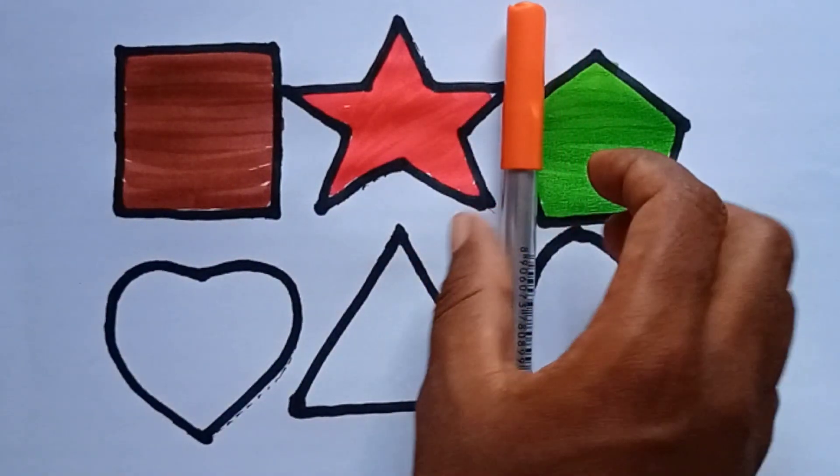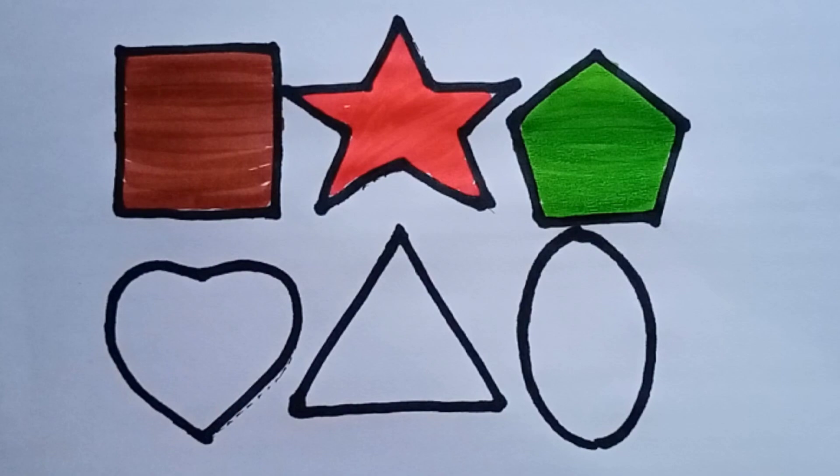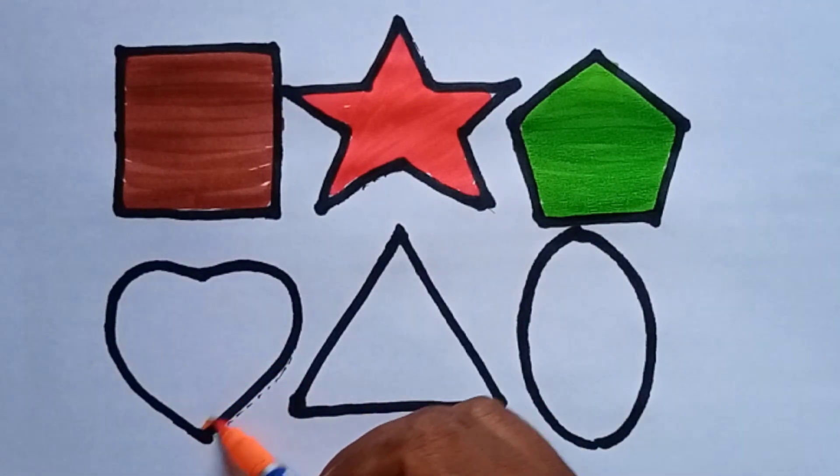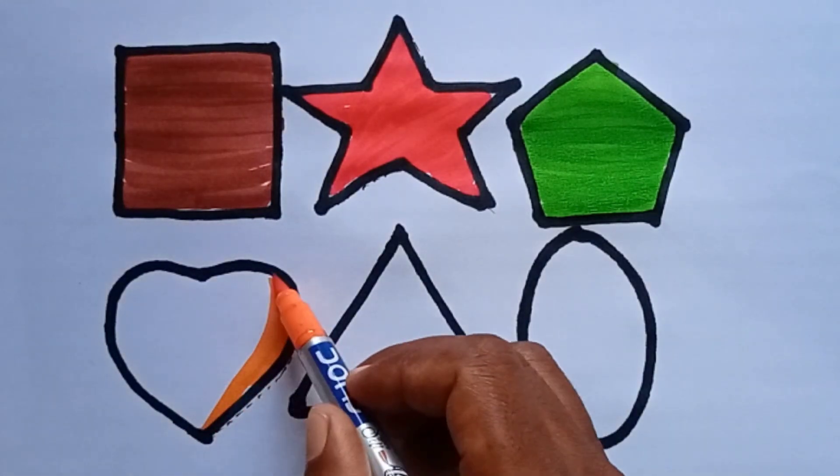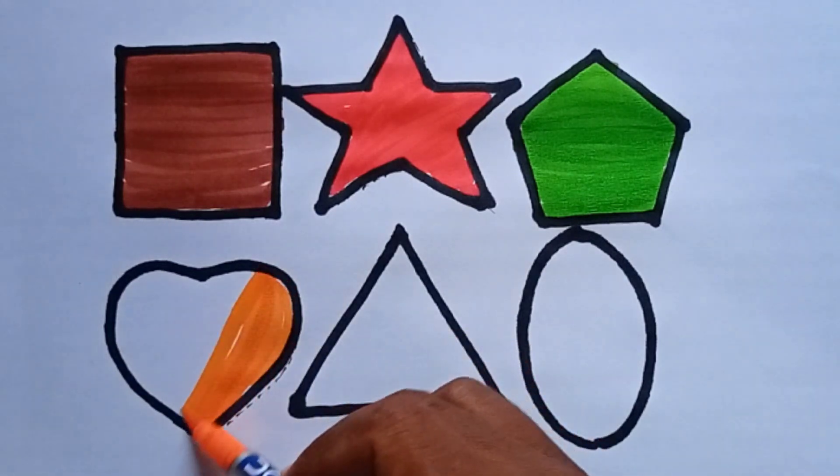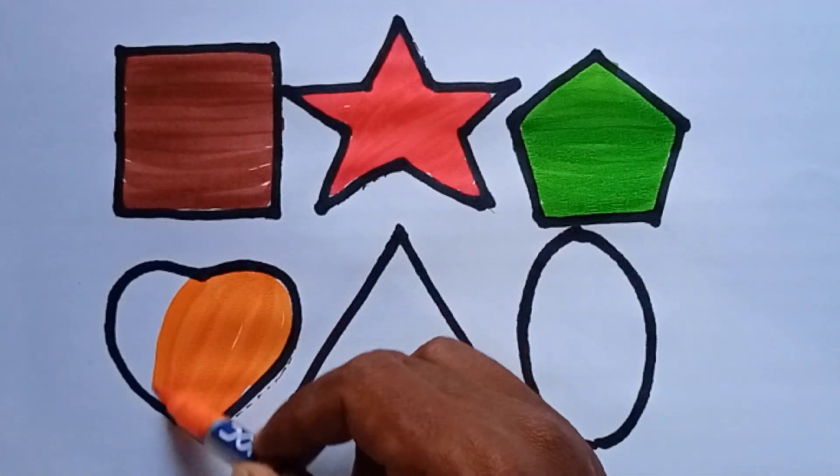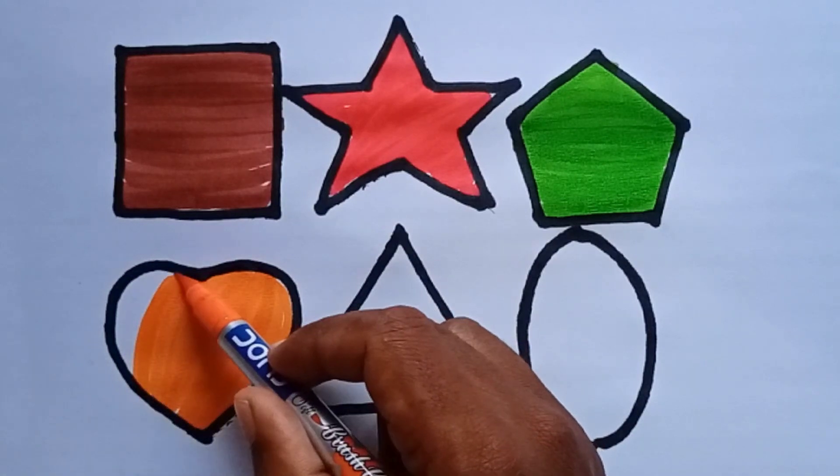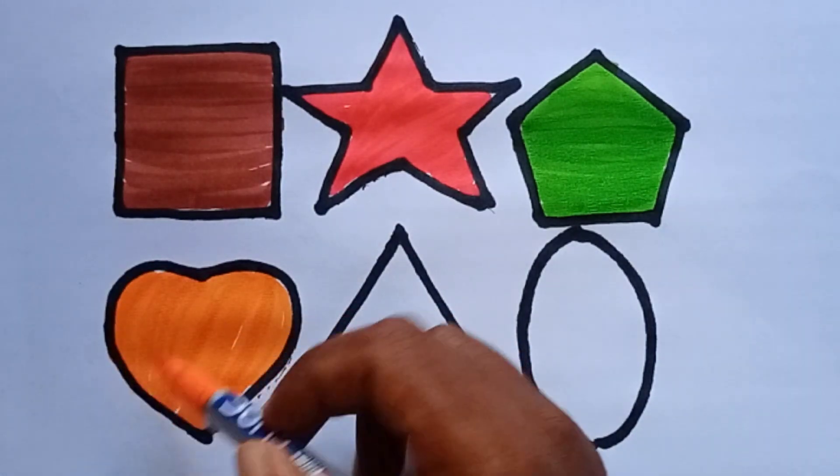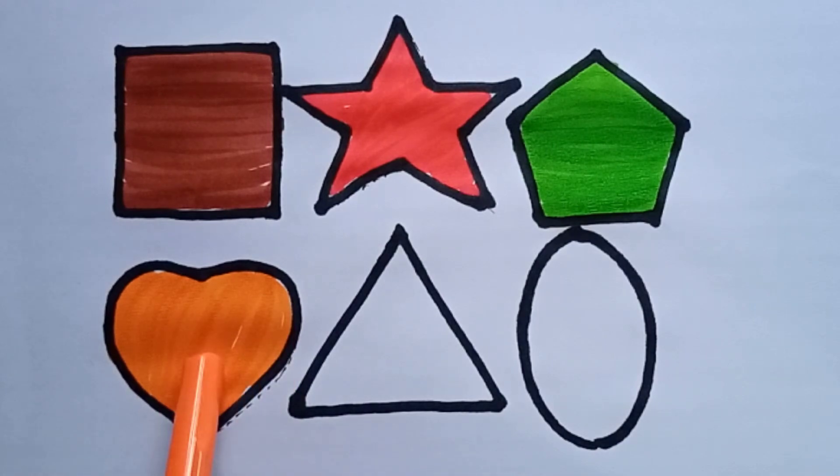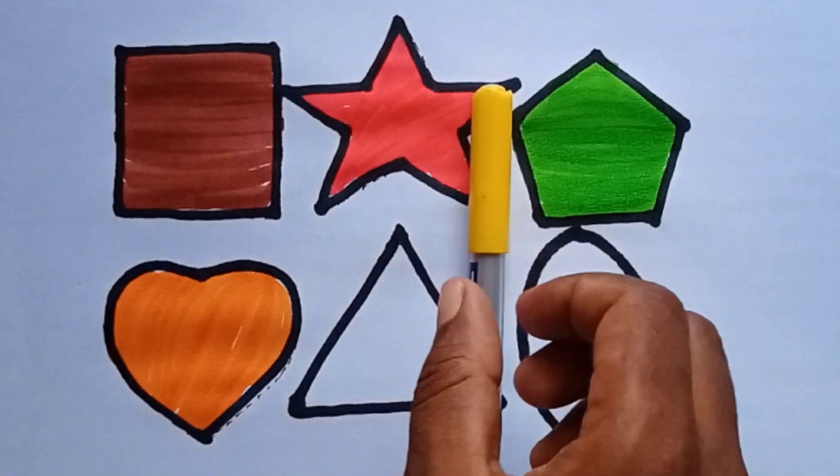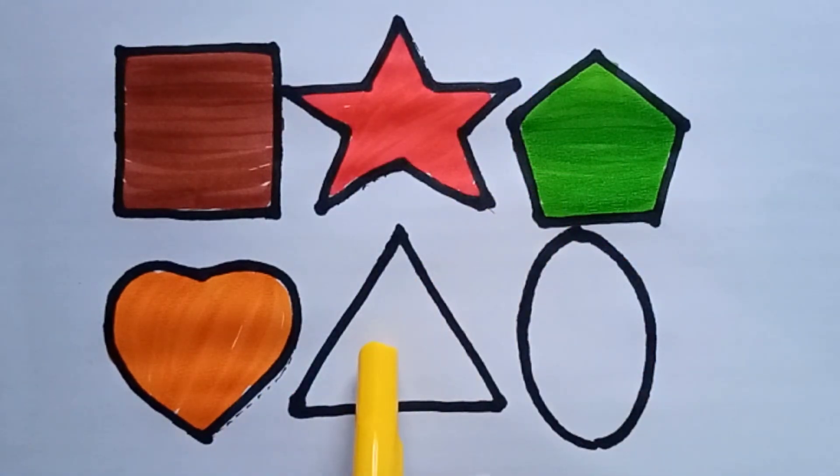And this one, orange color. I am coloring heart. Nice. This is heart. And next one, yellow color. I am coloring triangle.